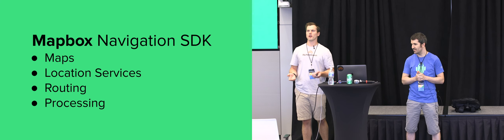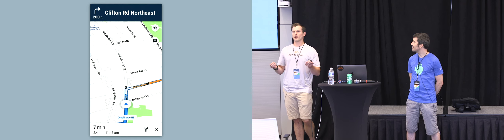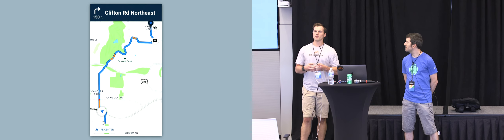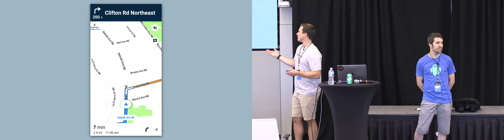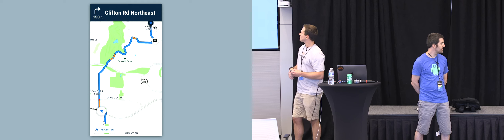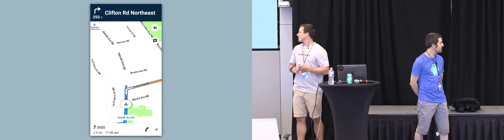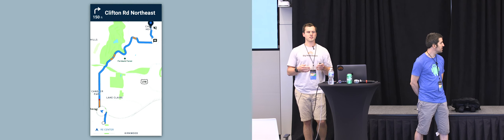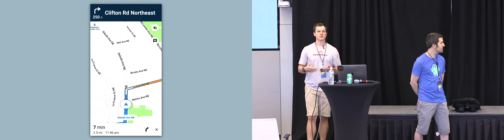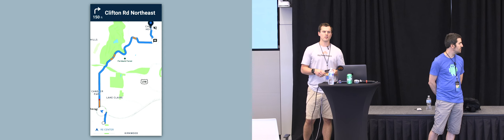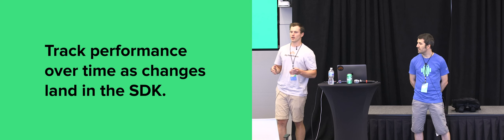Finally, the part most relevant to the Navigation SDK is route processing. You have a GPS point, you have a route, and you need to do all the math to figure out where you are progressing along the route. This is an example of a fluid navigation experience without any sort of chop. You can see '100 feet to Clifton Road Northeast.' You're probably familiar with using Waze or Google Maps — it's the same idea, the same experience. These are all the areas we're looking at when trying to build out a pipeline.